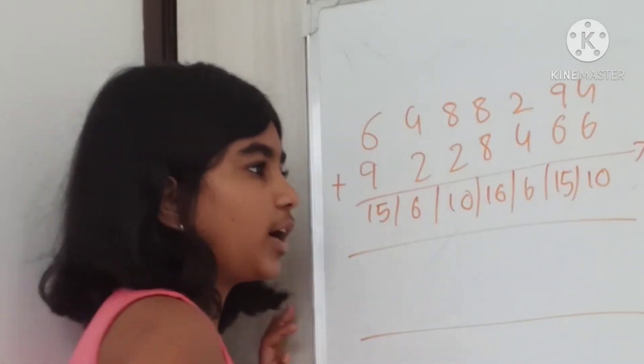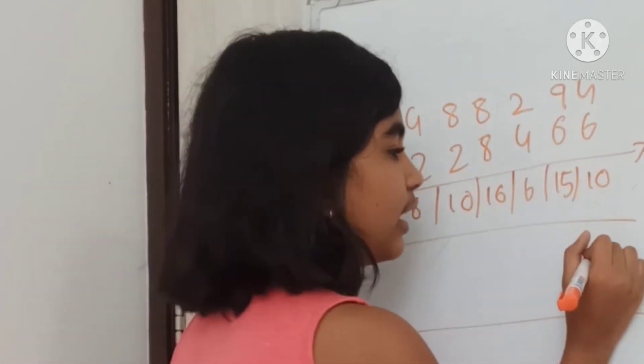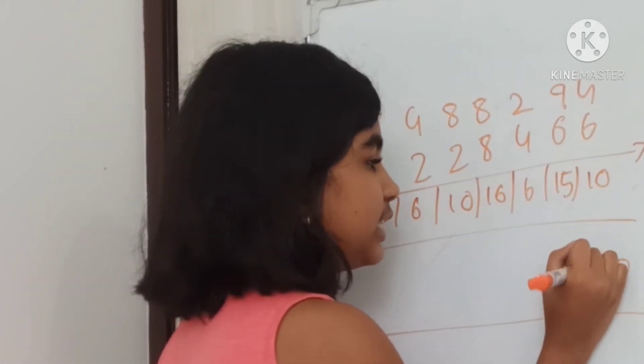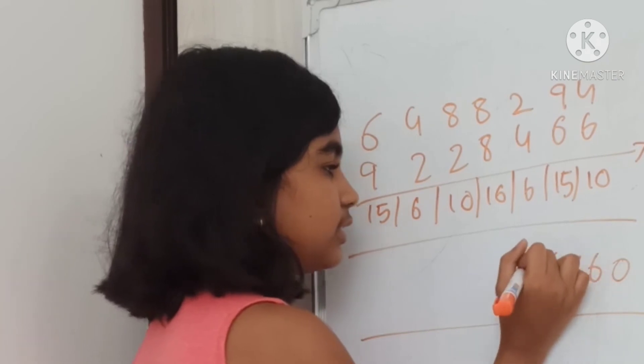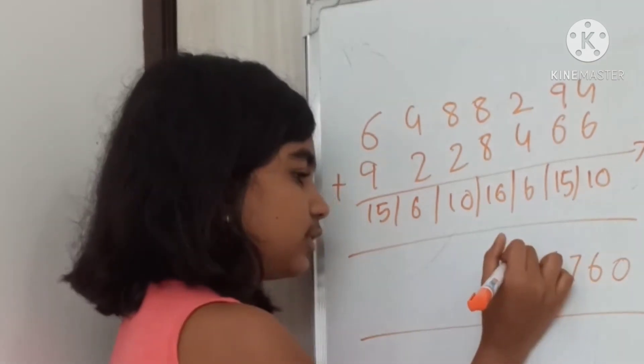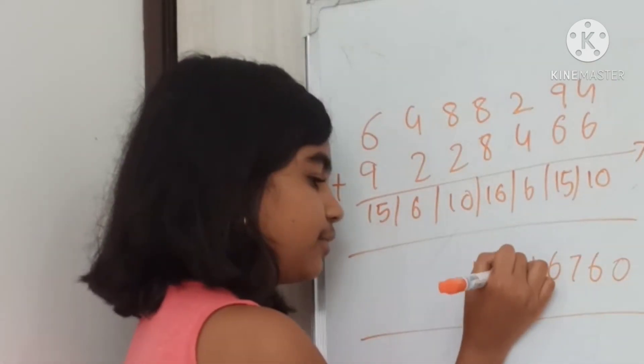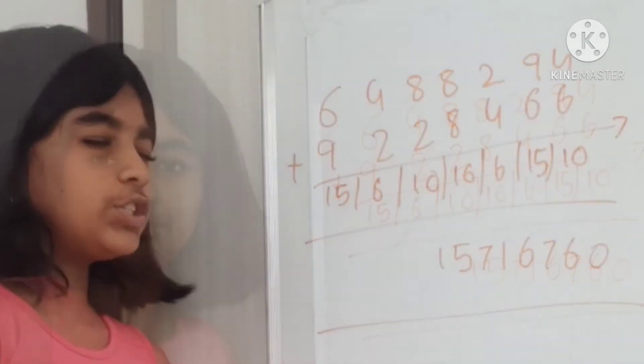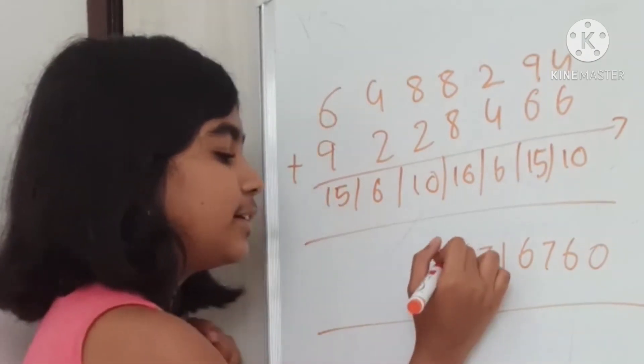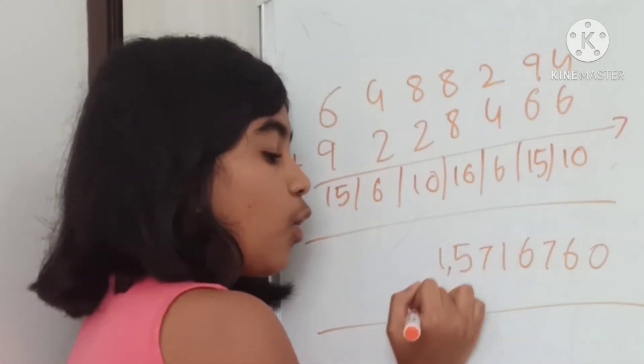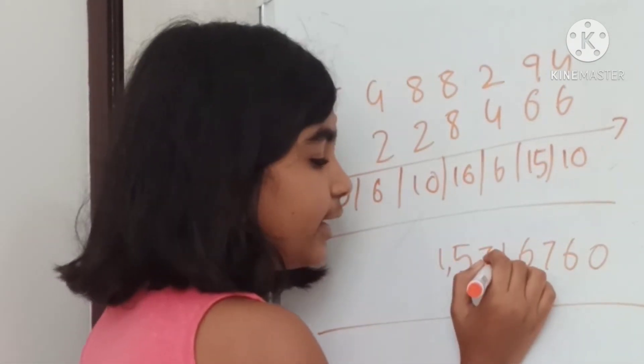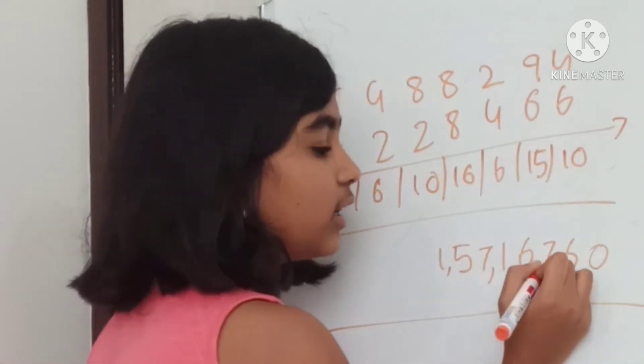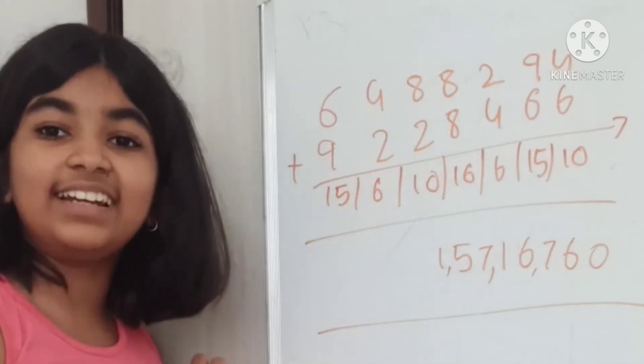Now, is this your answer? No. So, bring 0 down. 6, 7. 6, 1, 7, 3, and 5. This number is 15,71,6,760.